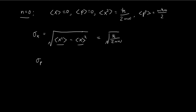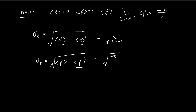We do the same thing for the standard deviation of p: the square root of the expected value of p squared minus the expected value of p, squared. Once again, this is equal to 0, so we just substitute the result in. Now we check the uncertainty principle — we multiply σx and σp together and need to make sure the result is always larger than or equal to h-bar divided by 2.